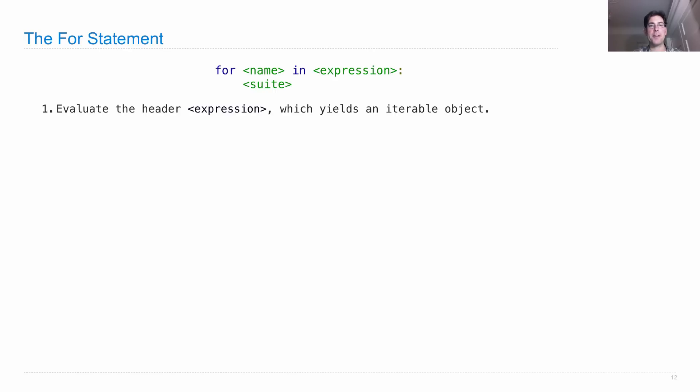It evaluates the header expression, which yields an iterable object. So I told you this many weeks ago without ever telling you what an iterable object really was. Well, an iterable object is just something that gives you back an iterator.